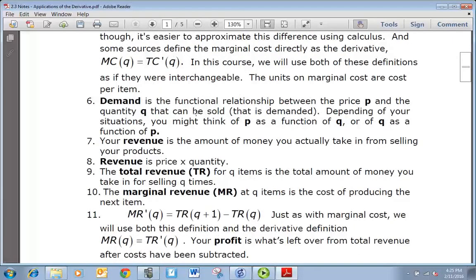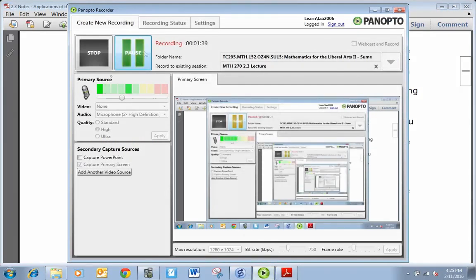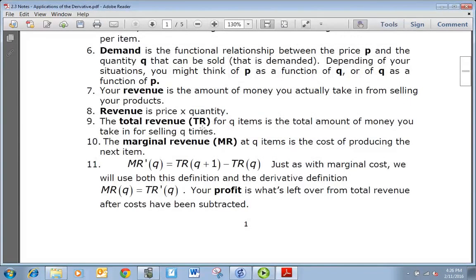And then we have demand, revenue, total revenue, and then marginal revenue is similar to marginal cost in that it's going to be the revenue gain from producing one more item. So there's a mistake here. Revenue from producing the next item, sorry about that.